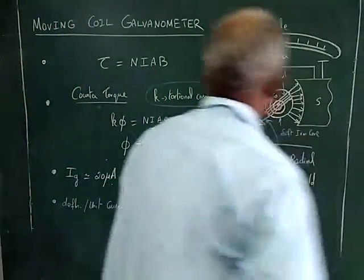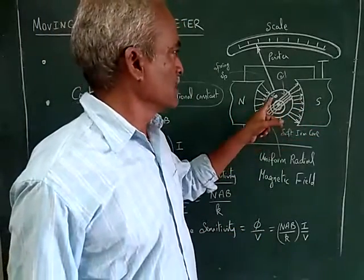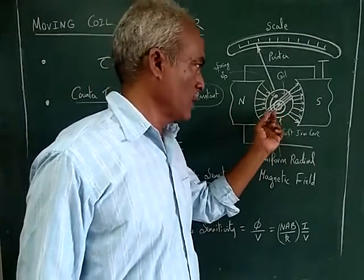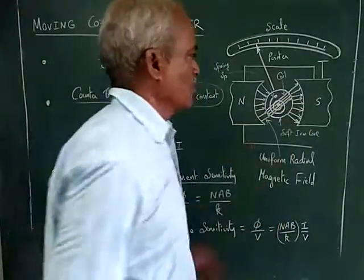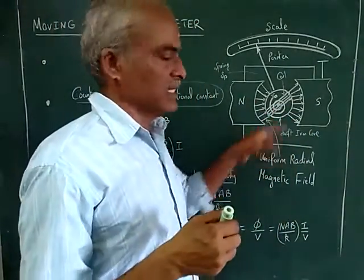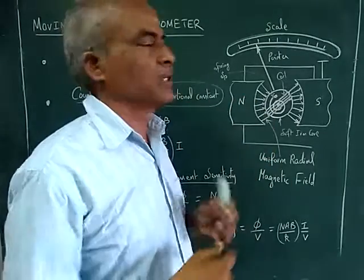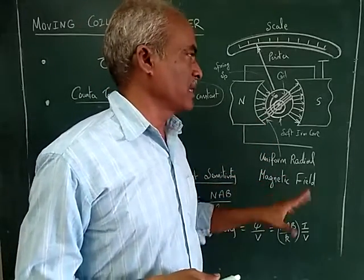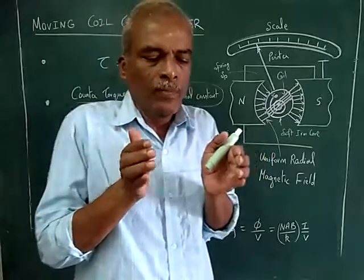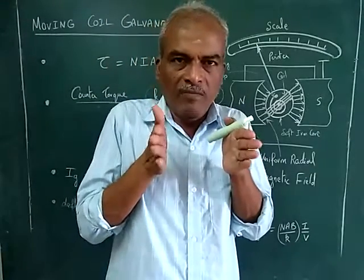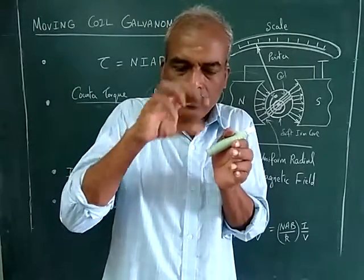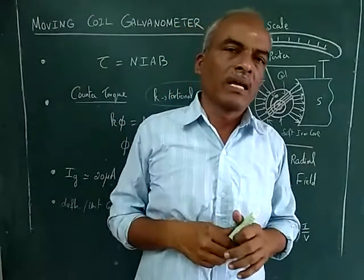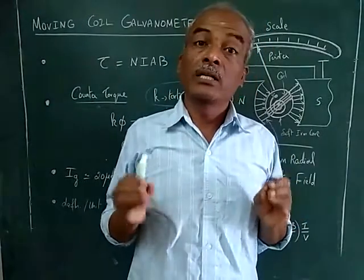We have north pole, south pole, and a spring to provide the counter torque. You can see the coil — in this top view it appears as a straight line, but actually it is wound around the soft iron core. The magnet poles are curved inside, and the soft iron core is cylindrical, so the magnetic field is in the radial direction throughout — it is a uniform radial magnetic field.